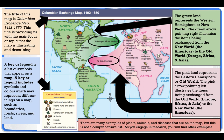There are many examples of plants, animals, and diseases on this map, but this is not a comprehensive list. As you engage further in your research in your small groups, you will find other examples of plants, animals, and diseases that were exchanged across the Columbian Exchange. You can notice that many of the items we see today in North America came from the Europe, Asia, and Africa side of the Columbian Exchange. At this time, I encourage you to pause the video and take a deeper look at the various foods, plants, animals, and diseases that were exchanged.